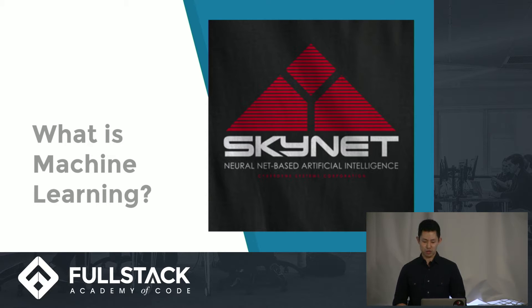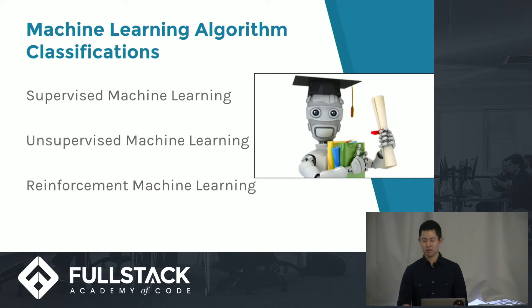At the core of machine learning, there lie many different types of algorithms. These algorithms can be classified into three categories: supervised machine learning, unsupervised machine learning, and reinforcement machine learning.